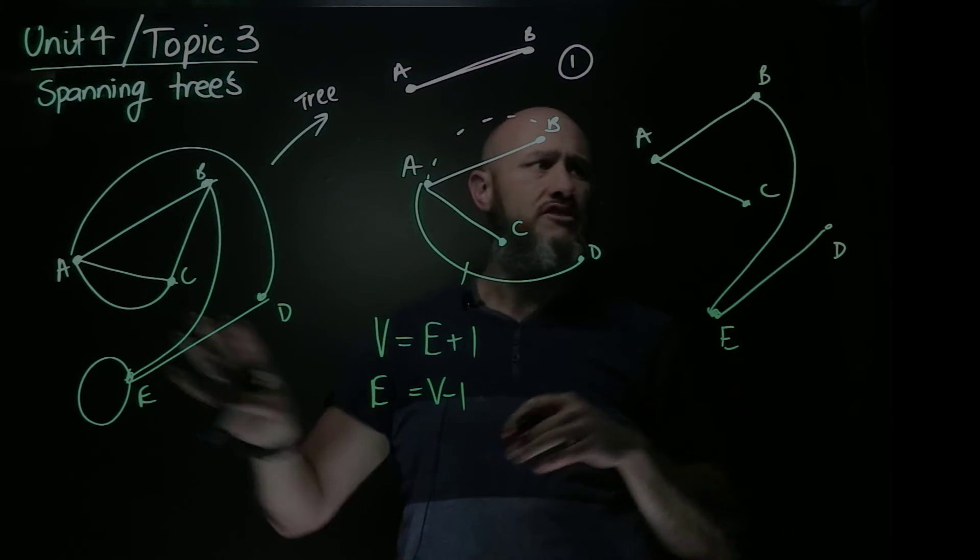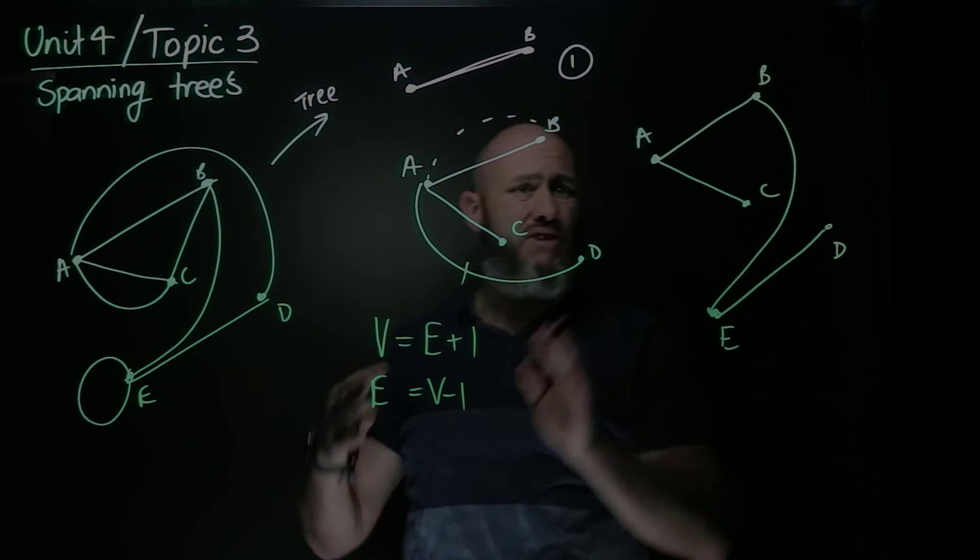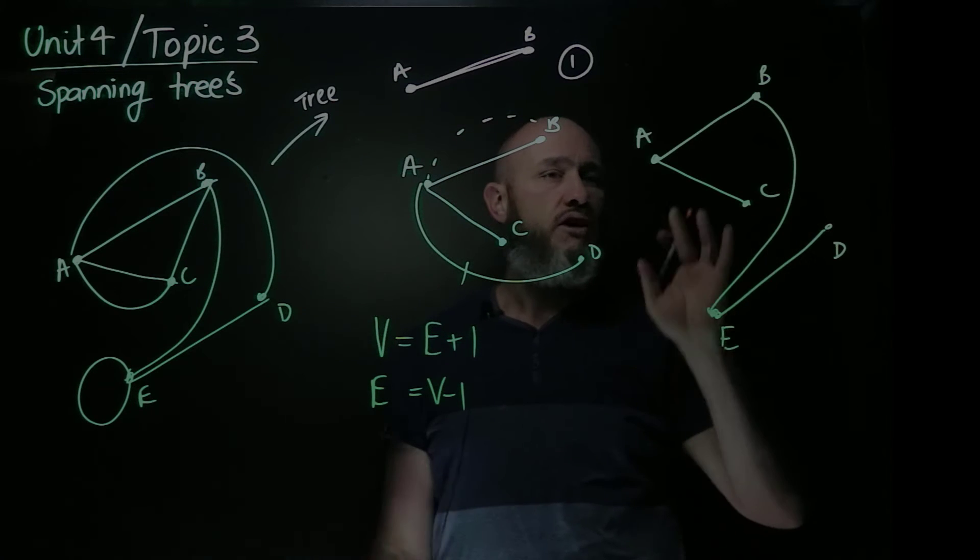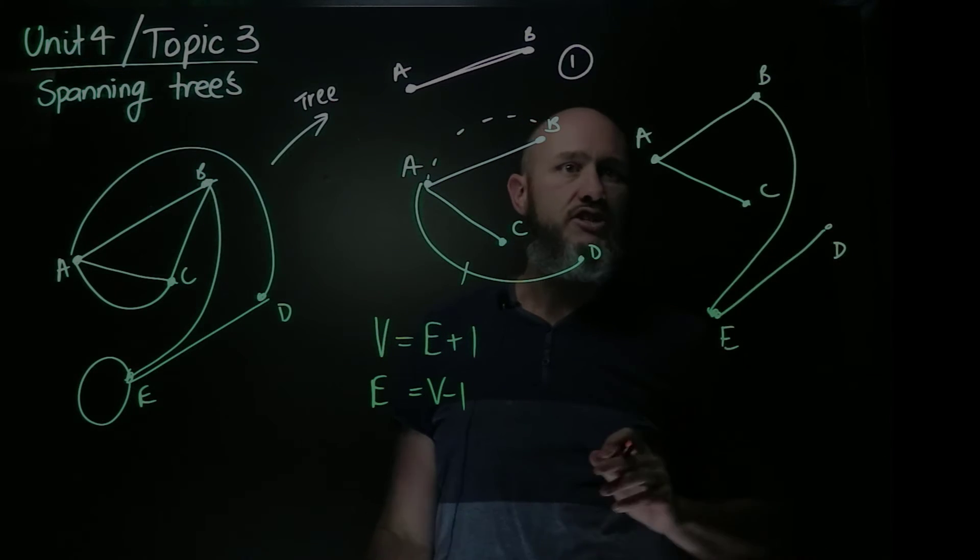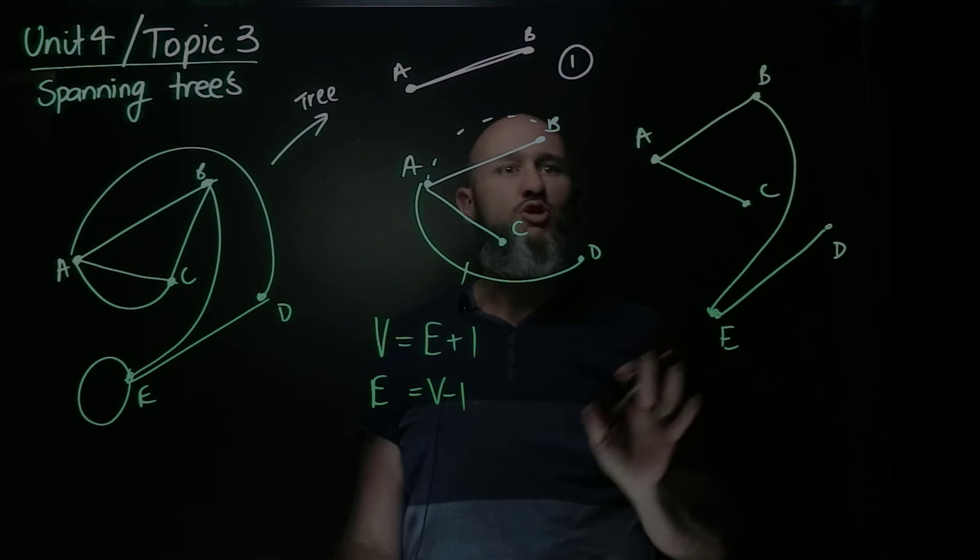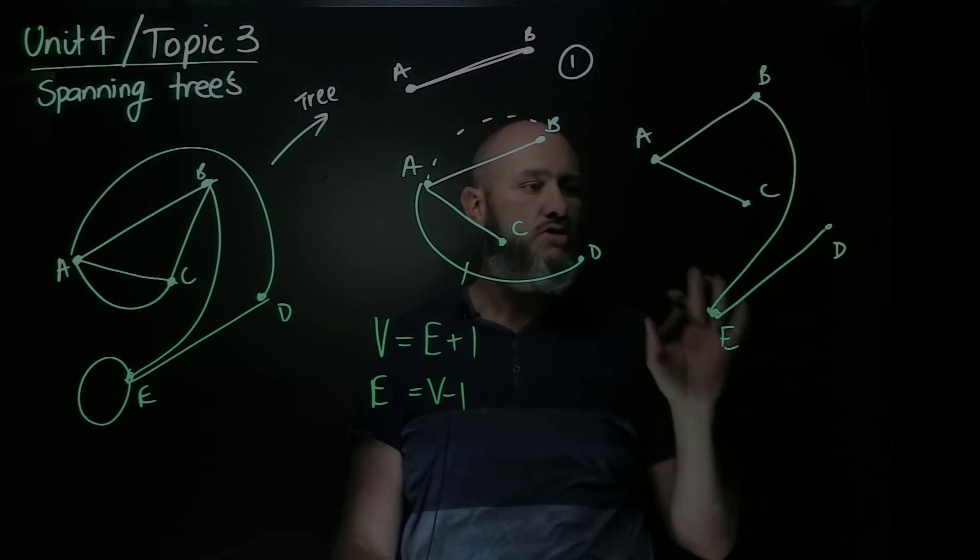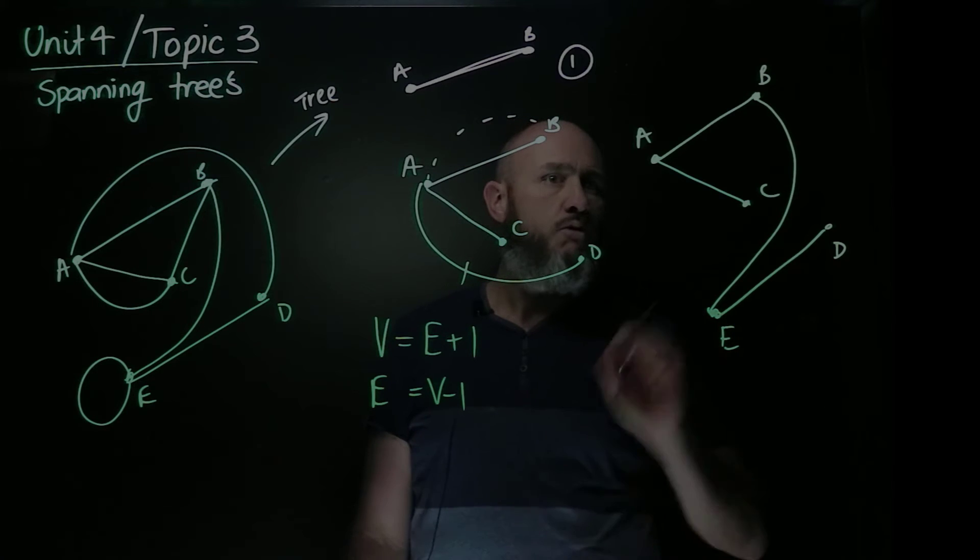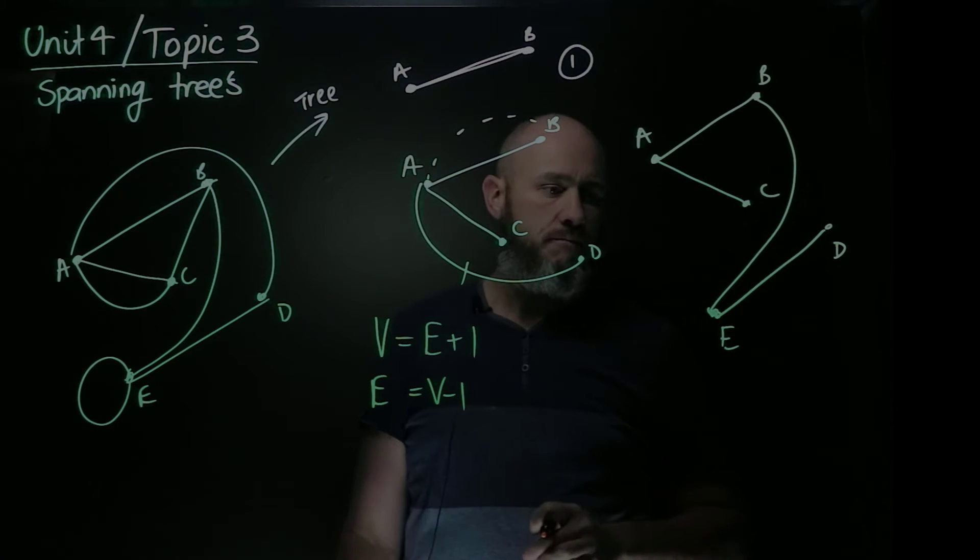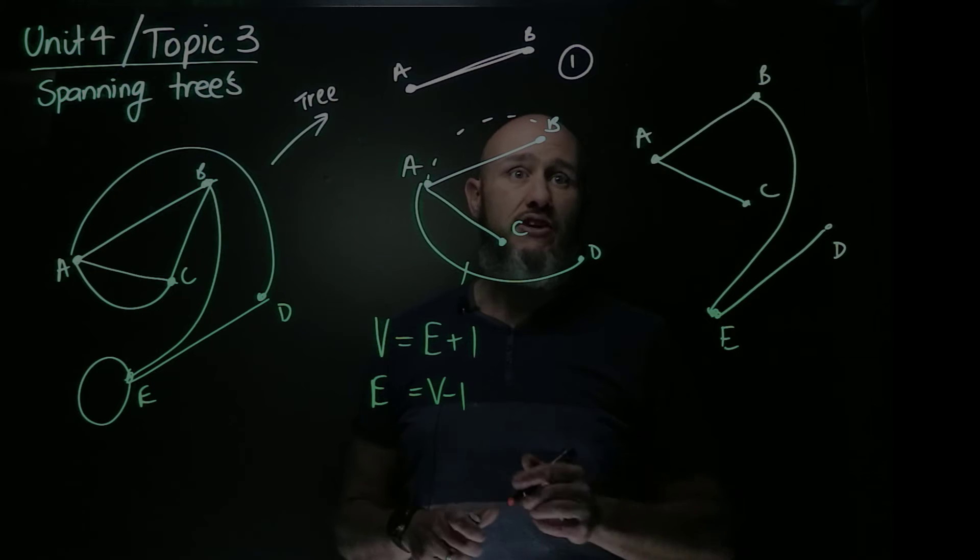That's now a spanning tree. And there's lots of different spanning trees that are included in this one. I could change it around. But by doing this, I've created a single tree, C is the start, D is the end. It connects perfectly. There's no multiple edges, there's no cycles, there's no loops. Everyone's happy. Four edges, five vertices. So that's trees and spanning trees.